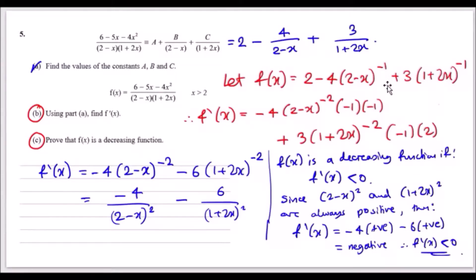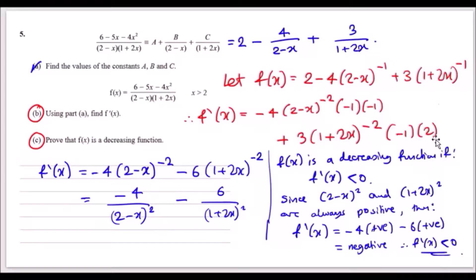The derivative inside becomes negative 1, the power drops to negative 2. For the second term, the same applies: differentiate inside to get 2, drop the power to get negative 1, subtract to get negative 2. Tidying up: minus 4 times negative 1 gives plus 4, and for the second term, 3 times 2 times negative 1 gives minus 6. That's the final derivative, and you can rewrite it in a cleaner form.